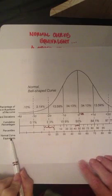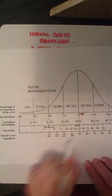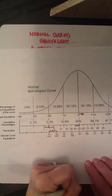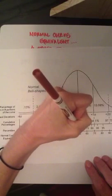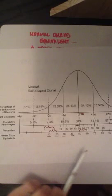So our normal curve equivalents have the advantage of being what's called an equal interval scale. The space between any two points on the normal curve equivalent scale is equal to the distance between any other two contiguous points on the scale.